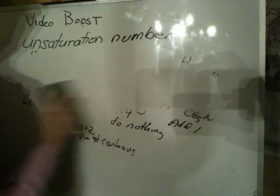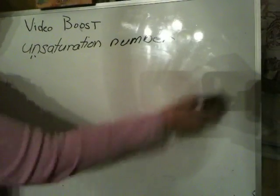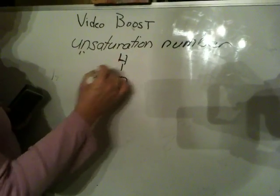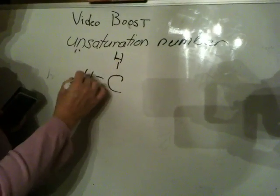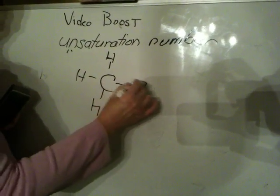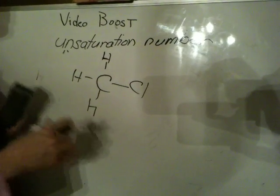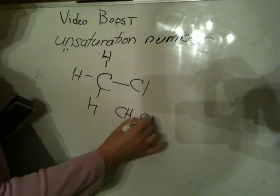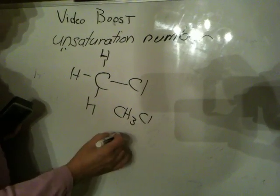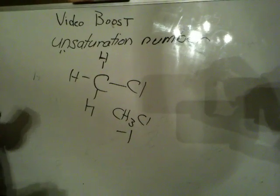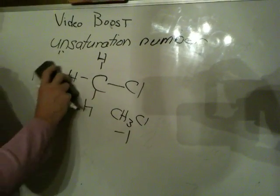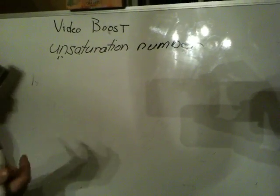Supposing you put a halogen in — it shouldn't be so surprising. If you put a halogen into the structure, the halogen will replace a hydrogen. So what happens to the number of hydrogens? It's CH3Cl. You have to take it down by one for every halogen in the structure.